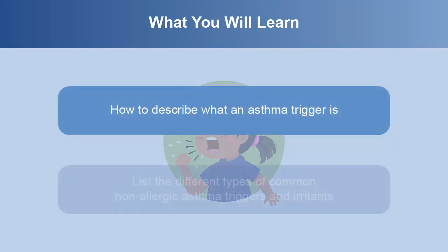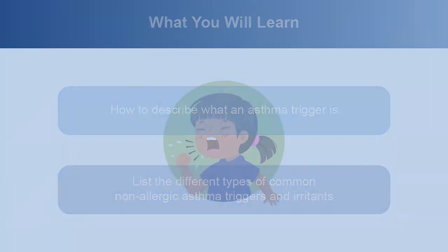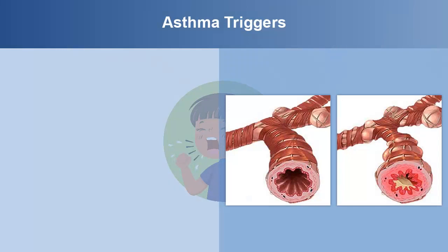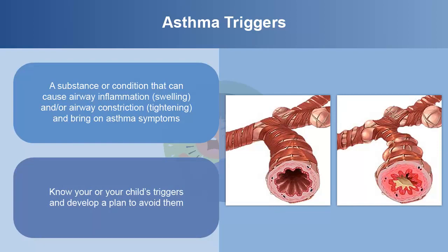You will be able to list the different types of common non-allergic asthma triggers and irritants. Asthma triggers are a substance or condition that can cause airway inflammation and airway constriction and bring on asthma symptoms. There are various types of triggers that don't affect every asthma patient in the same way.